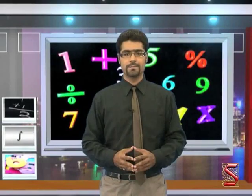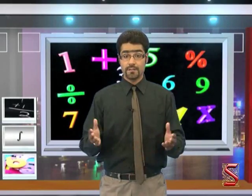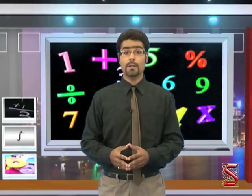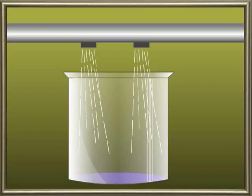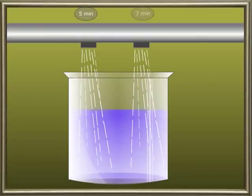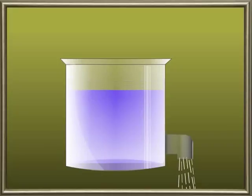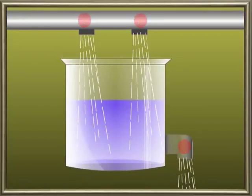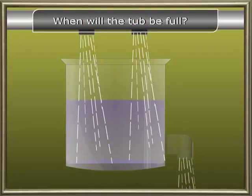Time and work: let's find out how much time a person took to complete a given work. Two taps can fill a tub in five minutes and seven minutes respectively. A pipe can empty it in three minutes. If all three are kept open simultaneously, when will the tub be full?